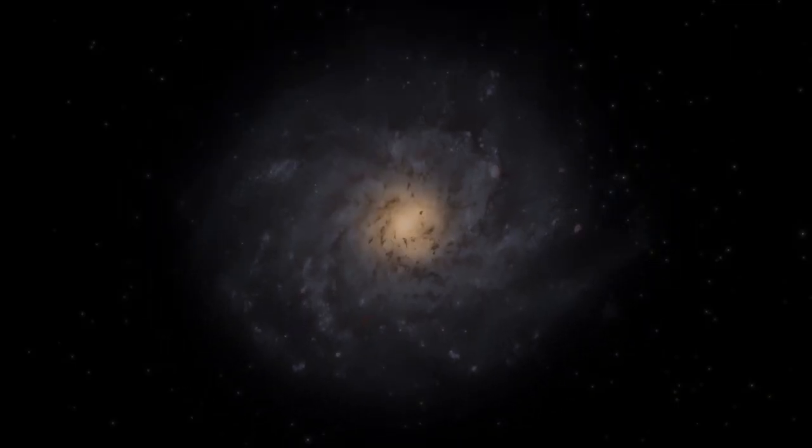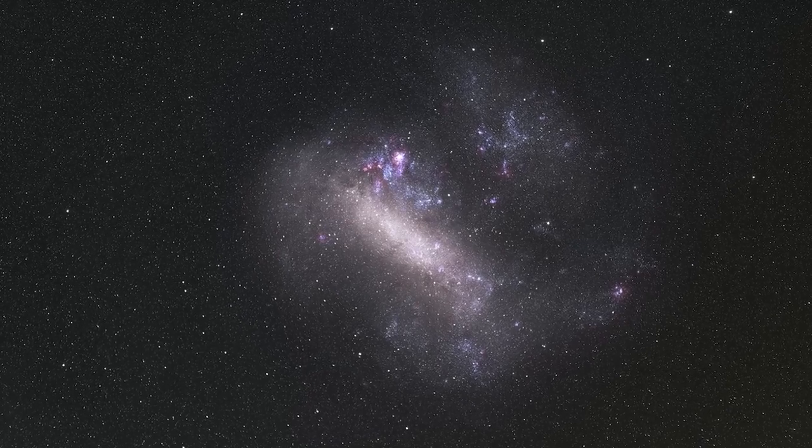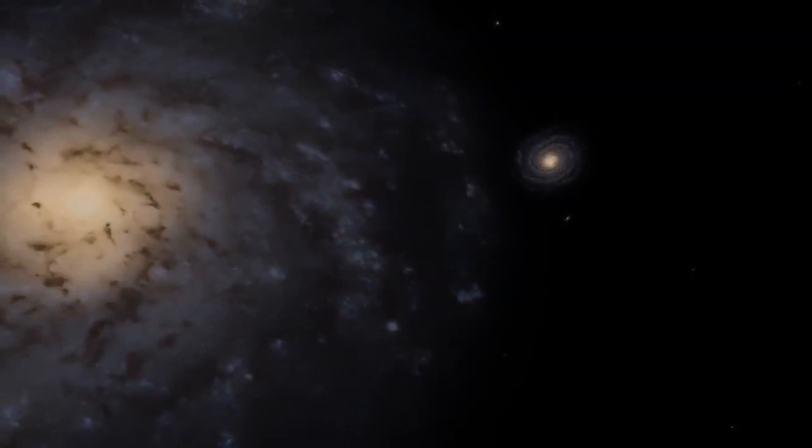Messier 33 is categorized as a spiral galaxy of the type SC, according to the Hubble sequence, which classifies galaxies based on their morphological characteristics.